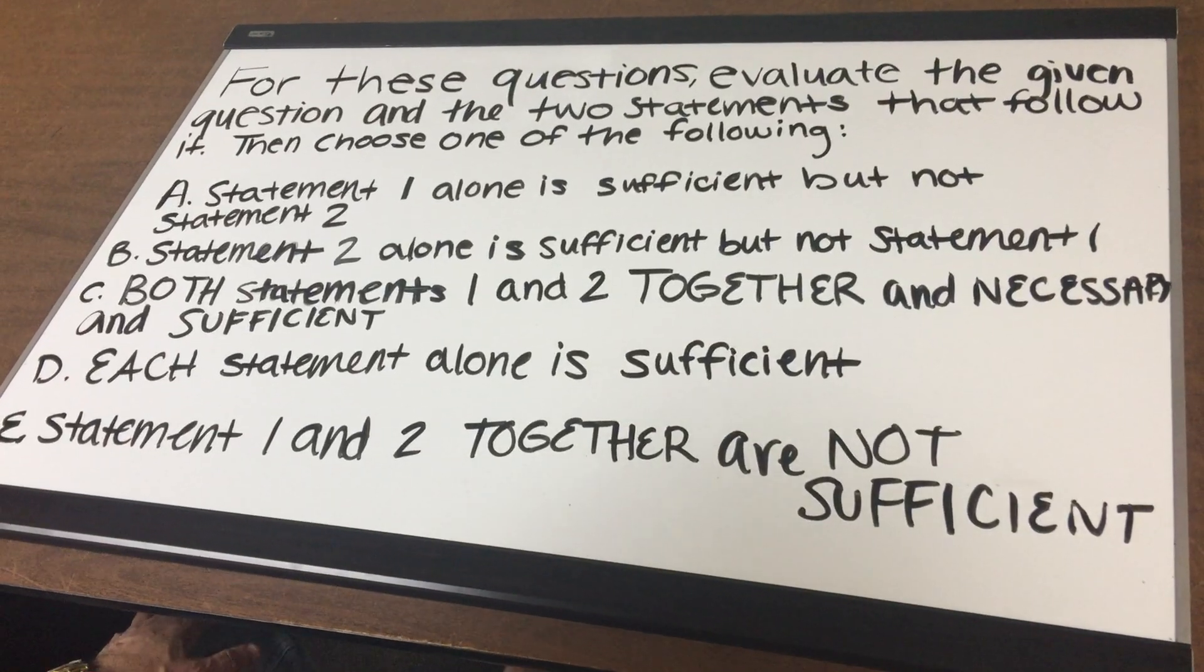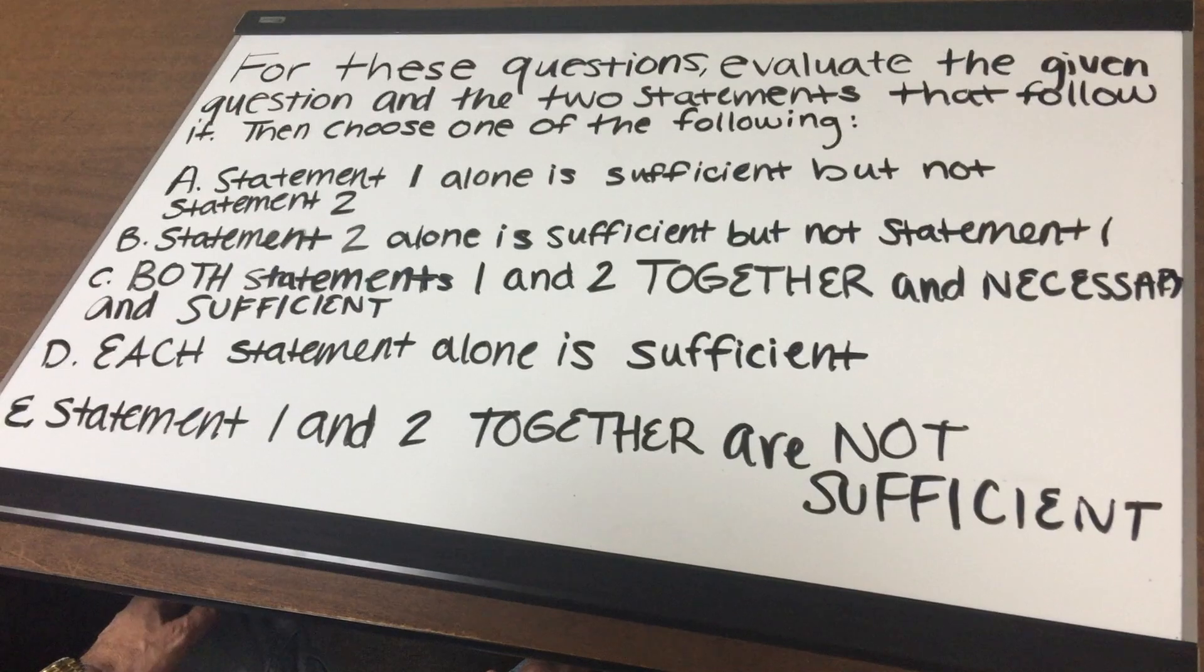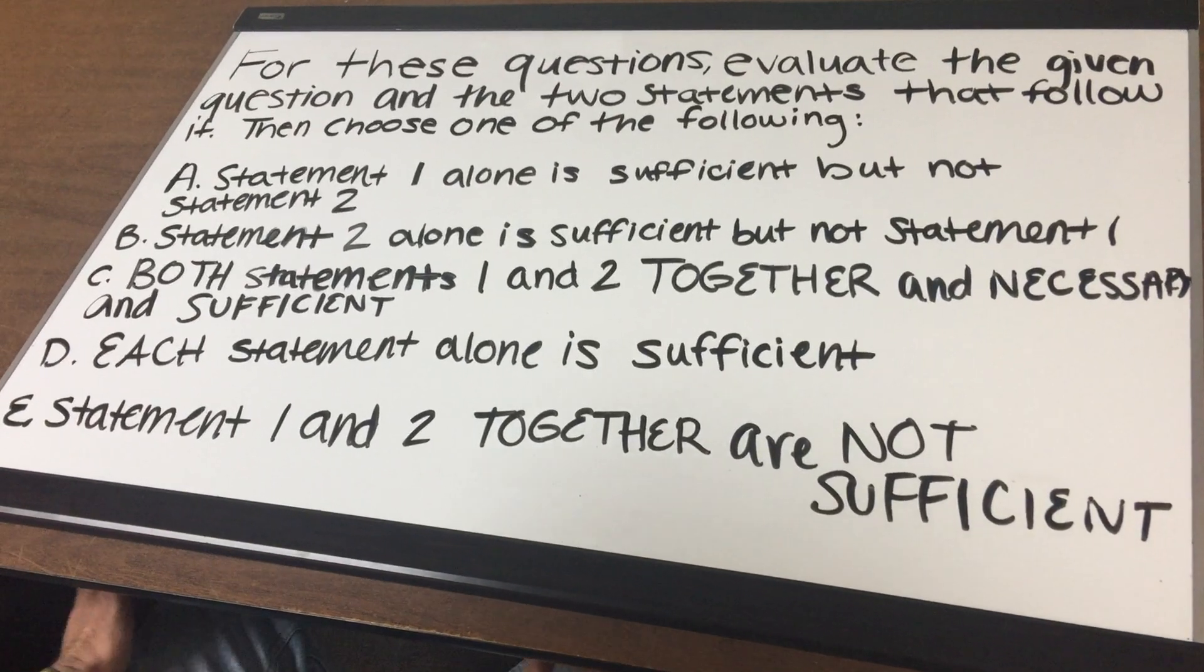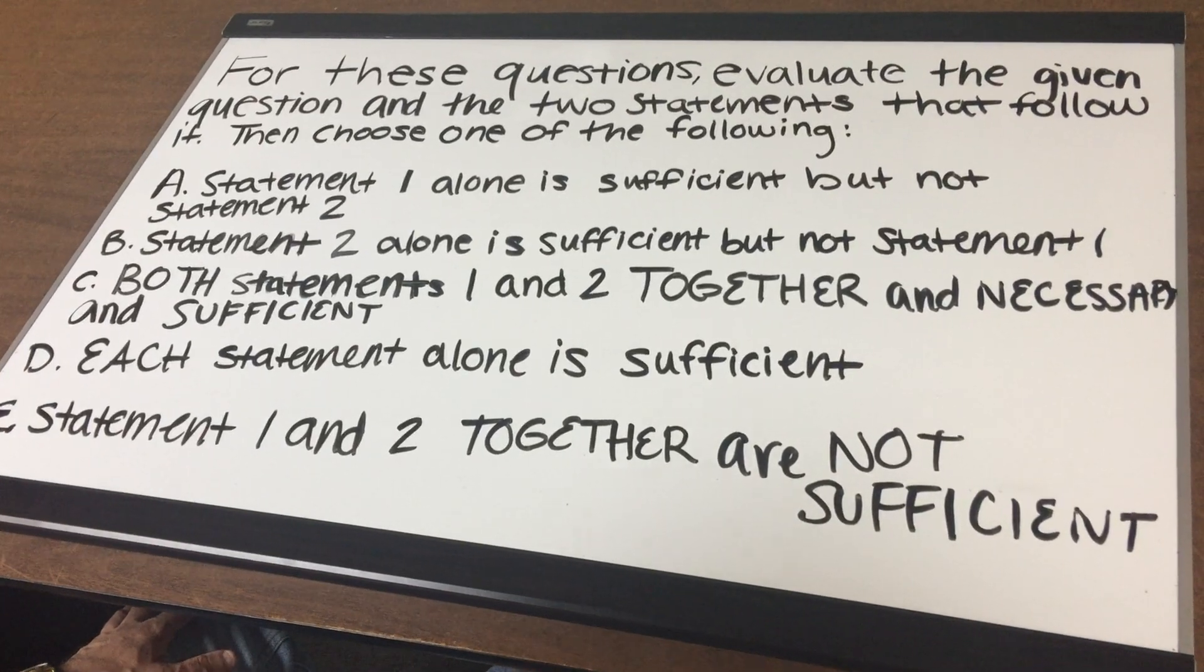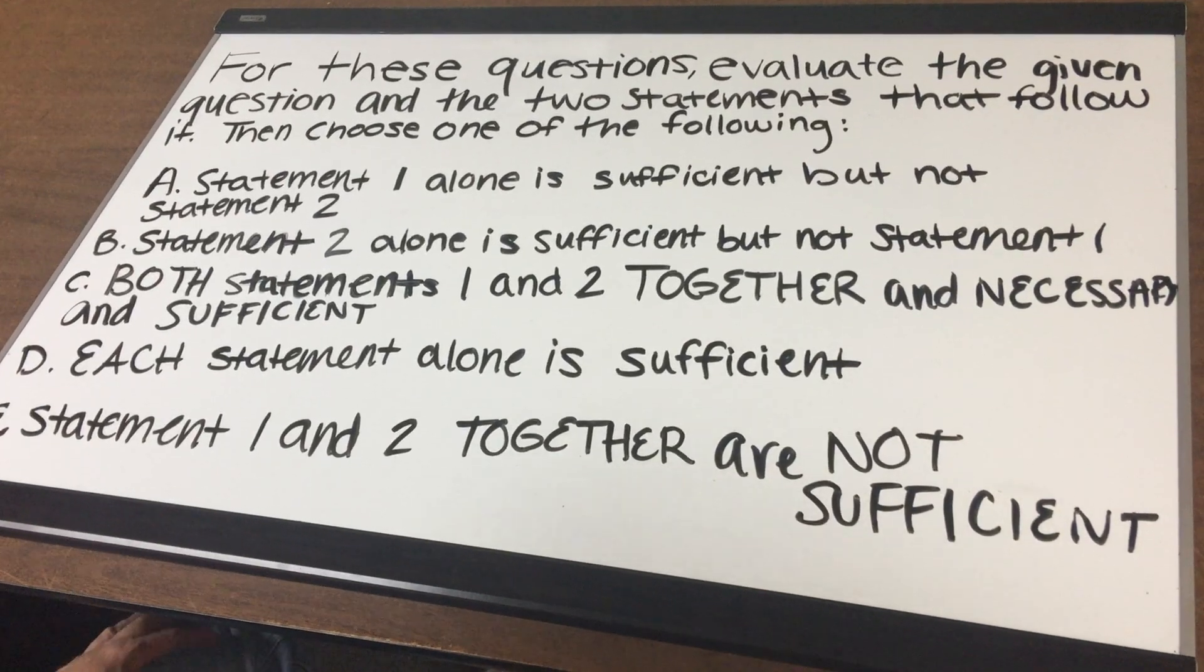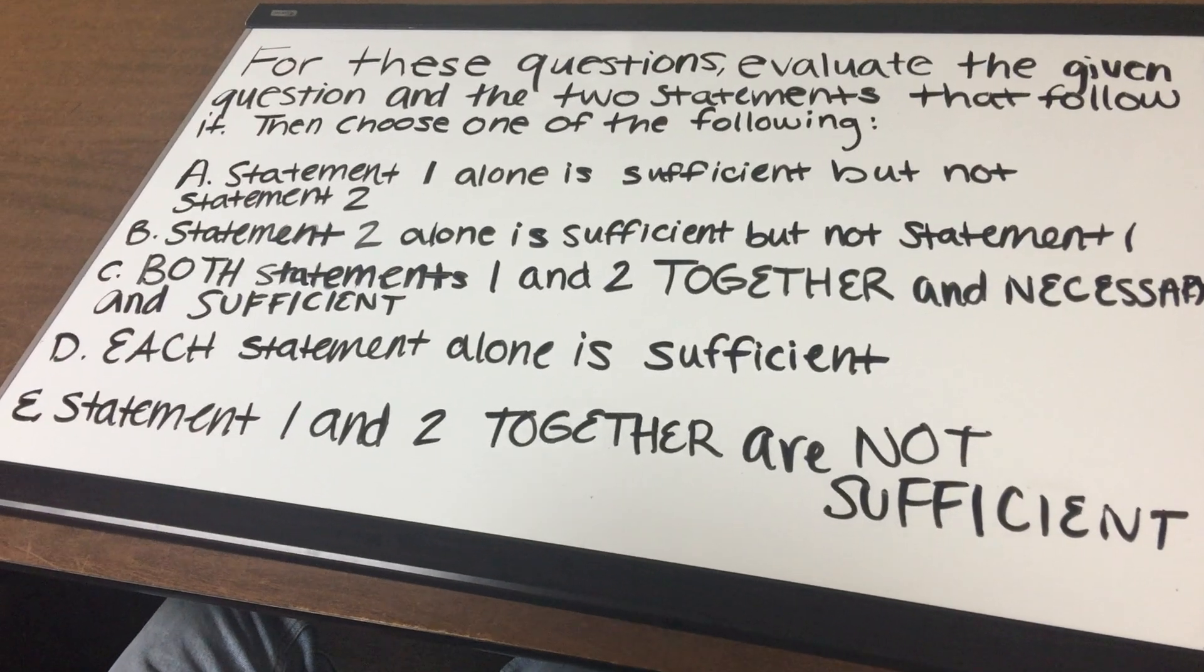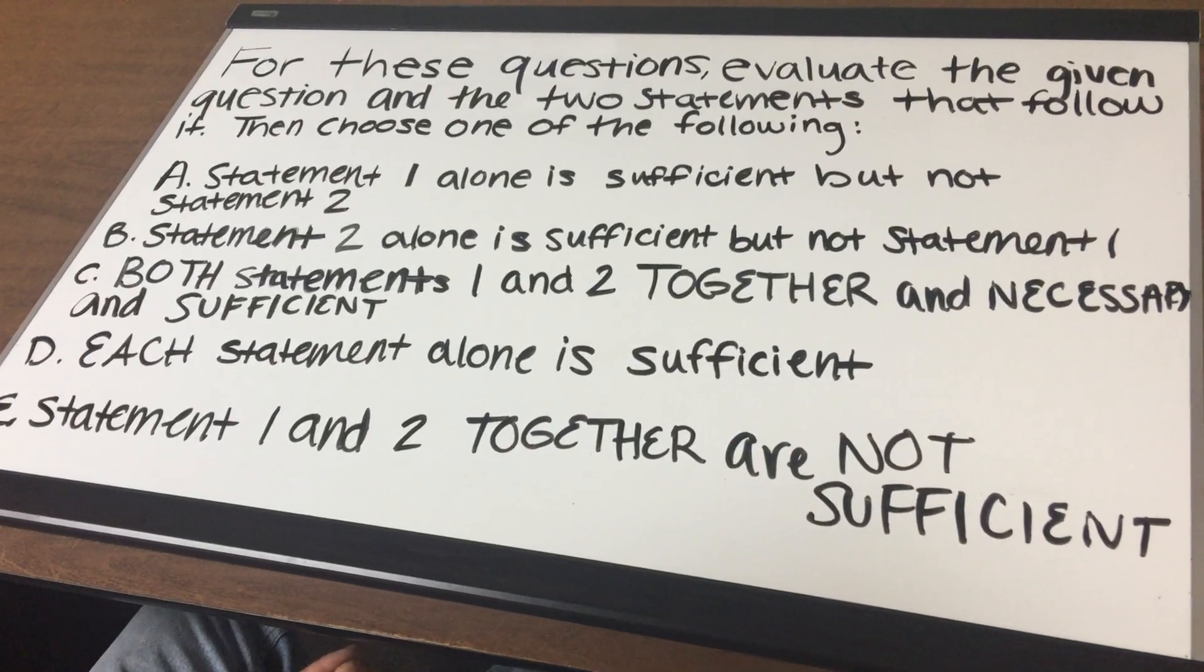Letter A: statement 1 alone is sufficient but not statement 2. B: statement 2 alone is sufficient but not statement 1. C: Both statements 1 and 2 together are necessary and sufficient. D: each statement alone is sufficient, or E: statement 1 and 2 together are not sufficient.